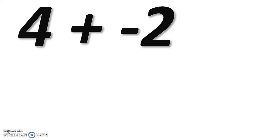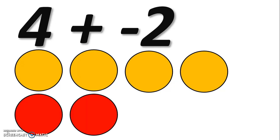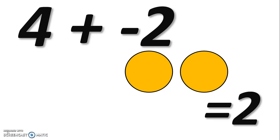Let's do another: four plus negative two. First build the problem using your counter chips. You should have four yellow counter chips and two red ones. Two yellows and two reds cancel out; remove them, and you're left with two yellow counter chips. The answer to four plus negative two is two.